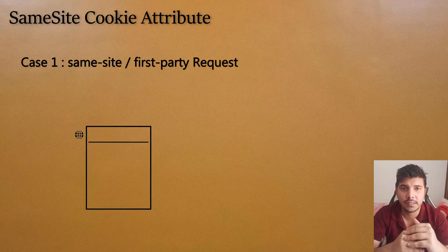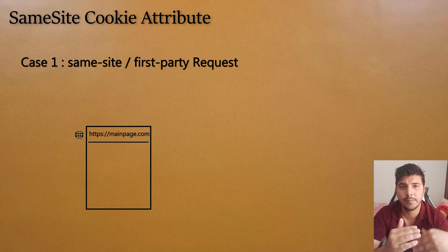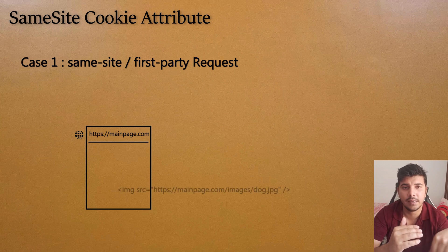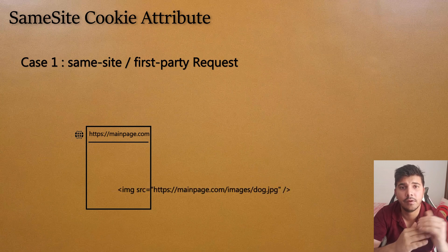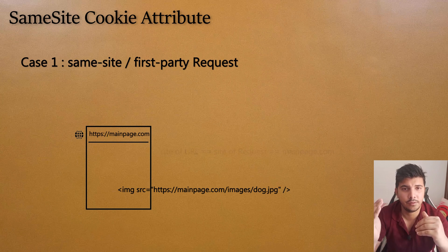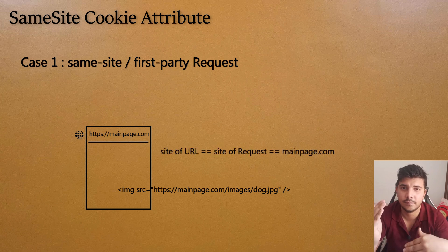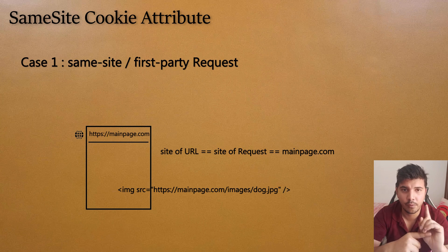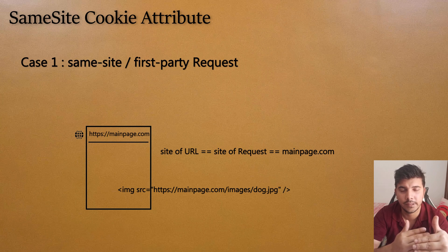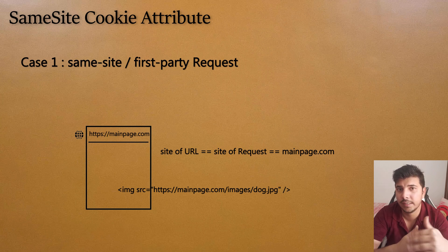For case one: you are visiting mainpage.com and within the page there is another request being made to mainpage.com — the site of the URL and site of the request is the same. We will reference this as the same-site request, or first-party request.